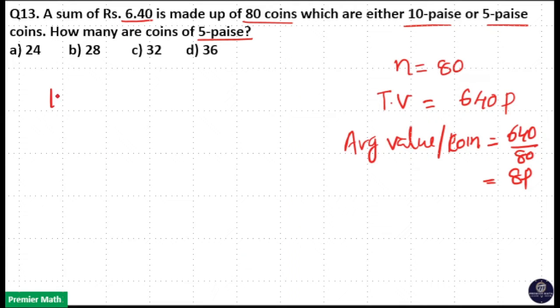So you have 10 paise coin here, 5 paise coin here, and average value of one coin is equal to 8 paise. So this is 10 paise coin, this is 5 paise coin, average value of one coin is equal to 8 paise.